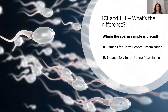It is simply the place where the sperm sample is deposited, and you can easily memorize that when you look at the meaning of the abbreviations. ICI stands for intracervical insemination and IUI stands for intrauterine insemination, so already the name of the treatment indicates the sperm's destination — either the cervix or the uterus. To visualize this difference, let us recall some details of female anatomy.